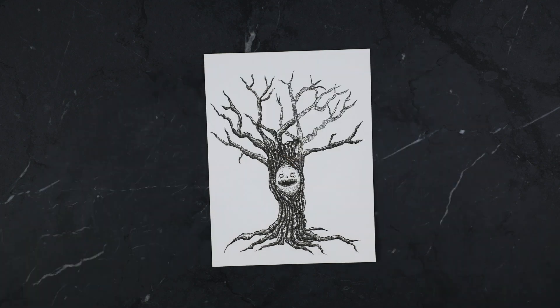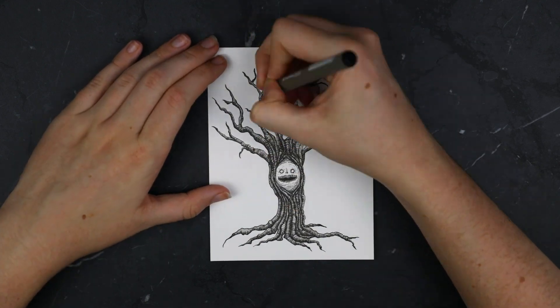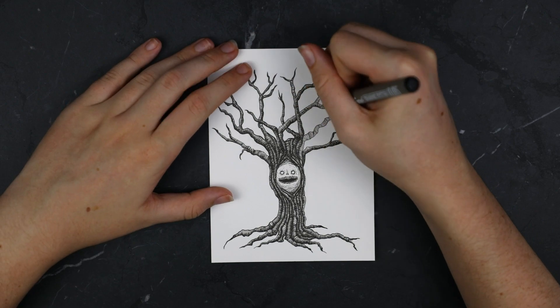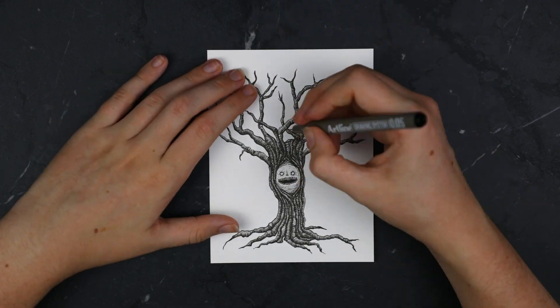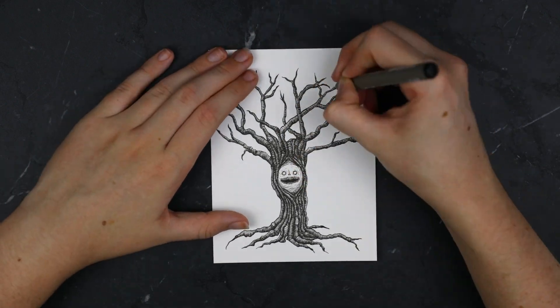I added some shading to the tree by going over the areas again with a thicker fineliner. I use a 0.05 fineliner for the bulk of the drawings.